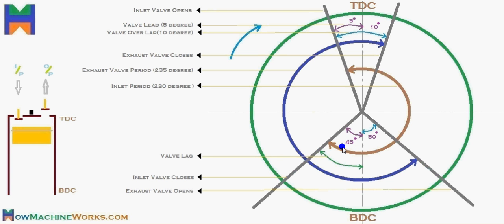Now let's look at the exhaust period. You can see this blue semicircle showing the exhaust period. Following the line, the exhaust period is 235 degrees of crankshaft rotation. In theory the exhaust valve should open at BDC, but here we can see the exhaust valve opens before BDC.